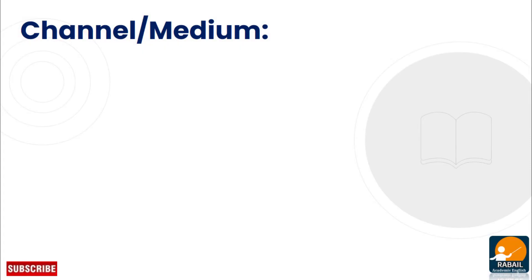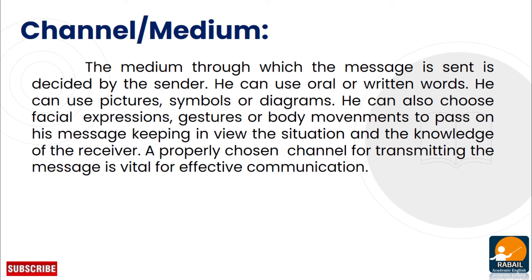Number four is channel or medium. After encoding, the sender decides through which channel to send the message. The medium through which the message is sent is decided by the sender. He can use oral or written words. For example, if you want to tell someone to be quiet, you can say it orally, write it down, or use a gesture — the message is the same but the medium is different.